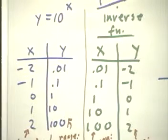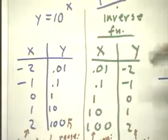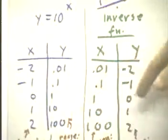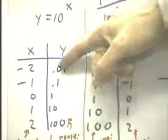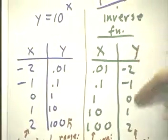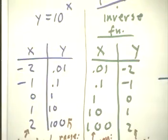Now, to get the inverse function, we make a table of y versus x again, and all we do is reverse the columns so that the y column from this table becomes the x column of this table, and the x column of this table becomes the y column of this table.